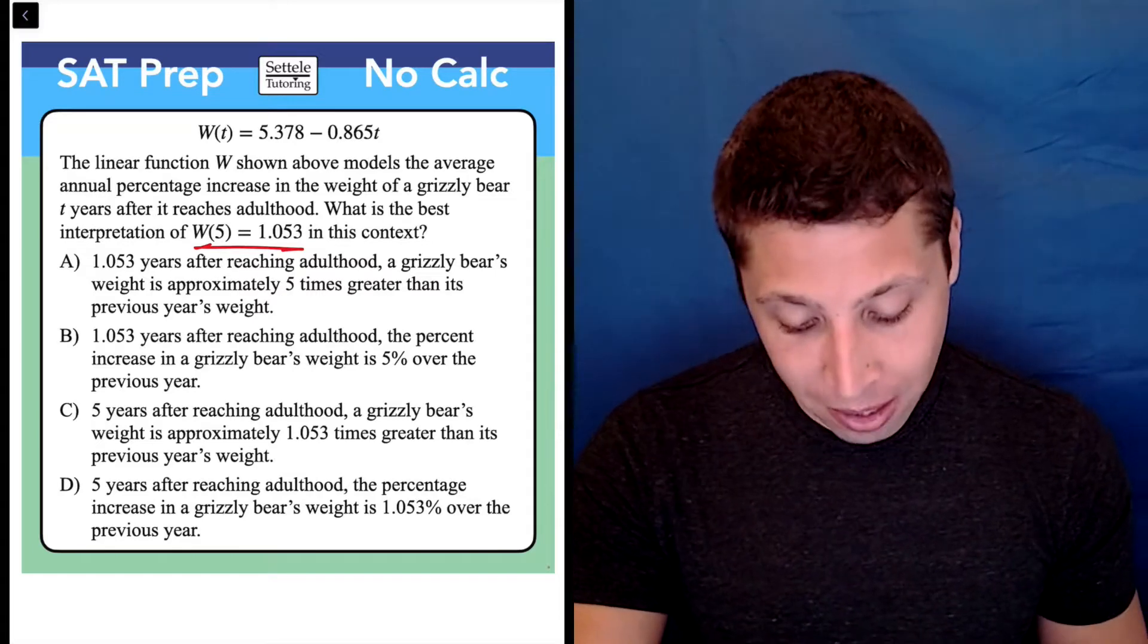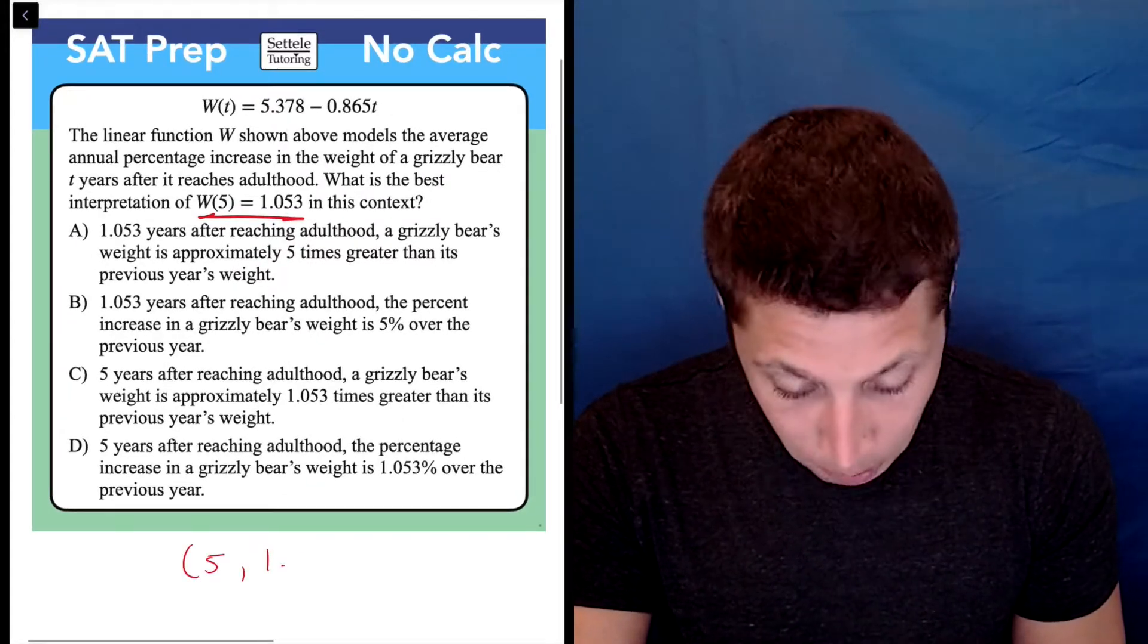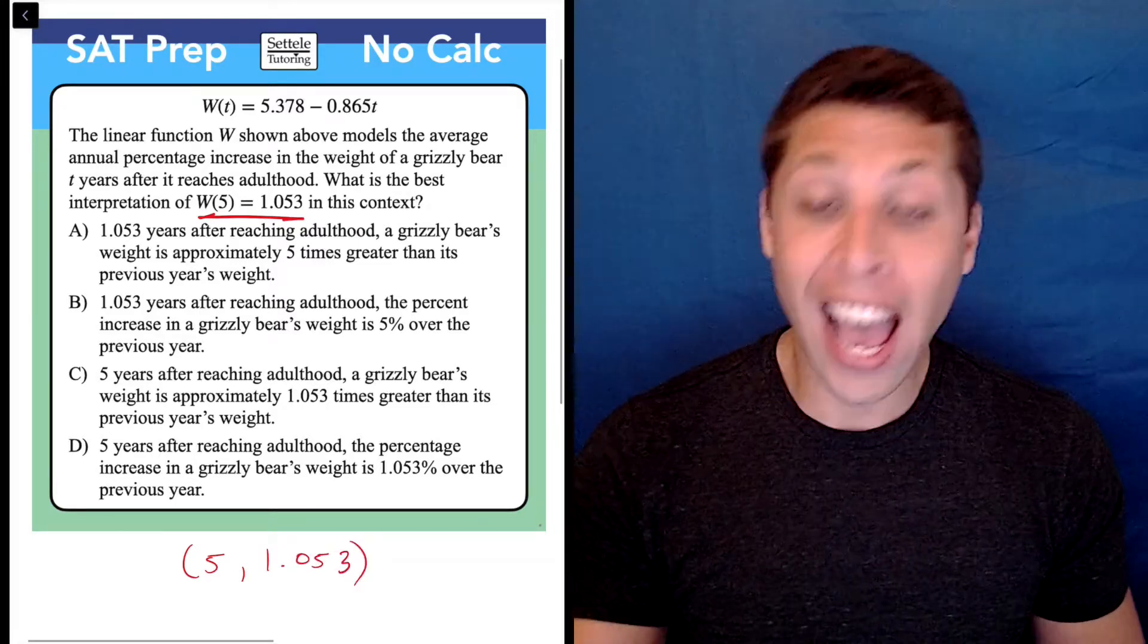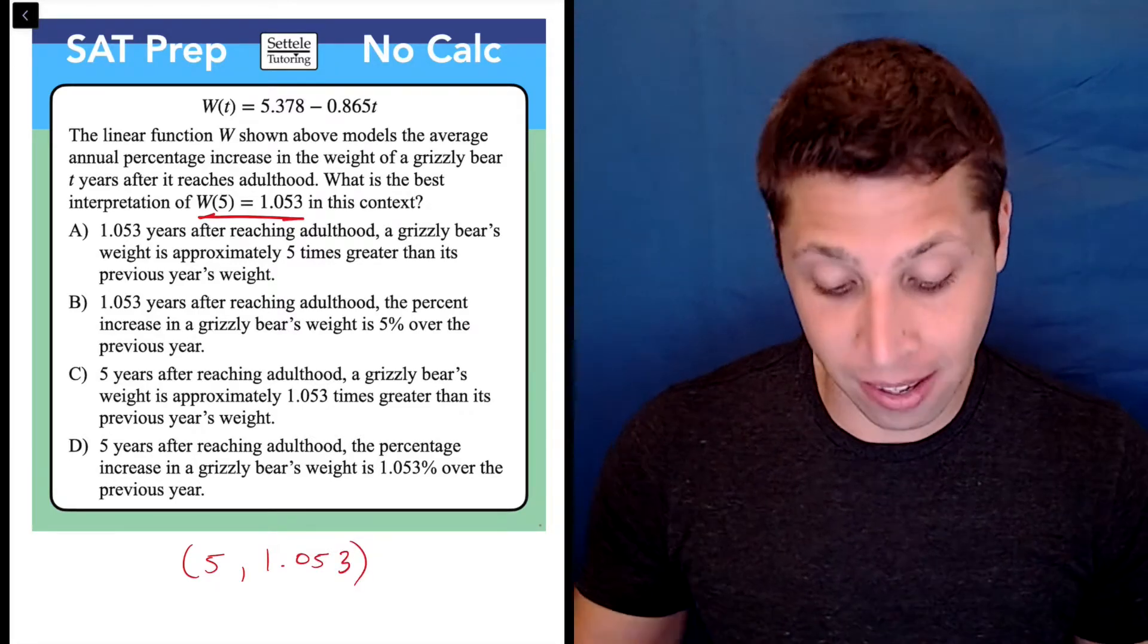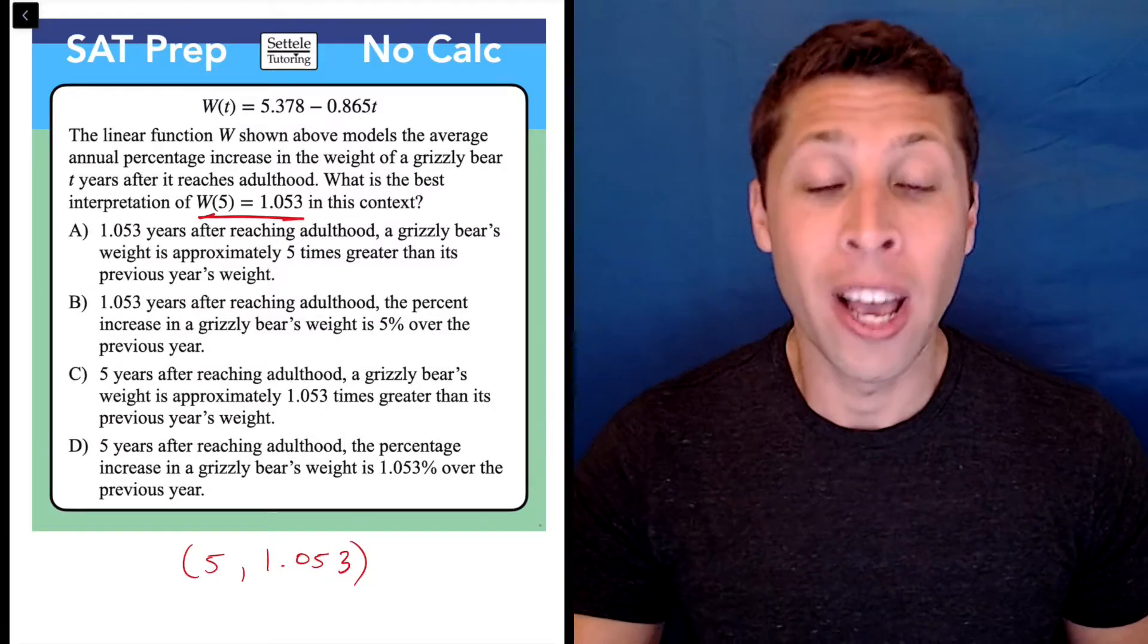This is a function notation, but this is basically the point 5, 1.053, right? So the X or the T in this case is kind of going in the parentheses and then the Y coordinate or the W of T is 1.053. So this is a point.